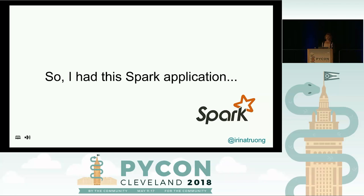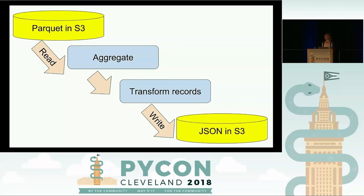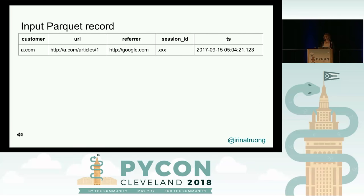So I had this Spark application. The application reads some Parquet data in S3, aggregates and transforms those records, and writes JSON back to S3. That JSON is then indexed into Elasticsearch. My input record has customer, URL, referrer, session ID, and timestamp. This data comes from tracking a customer's website — the customer places a JavaScript snippet on their site which sends us pixels, and we collect visitor statistics. The customer gets to see a dashboard: what content was popular, how many people visited, who was referred by what — very useful information for a publisher.